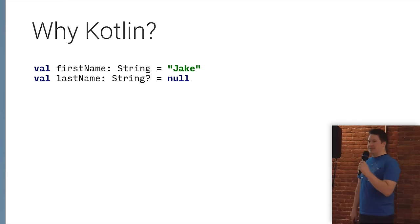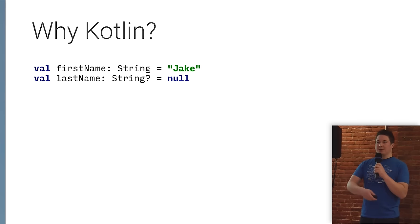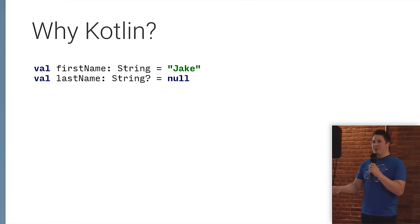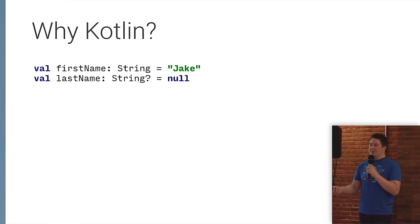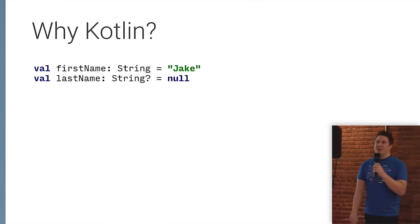The first is that Kotlin actually models nullability in its type system. When you get a field or a method return value, you know whether or not it's going to be null because the type system can express this through a question mark appended to the type signature.